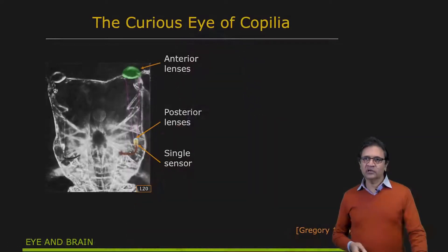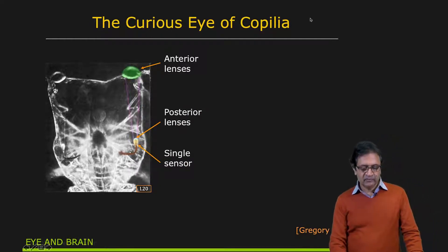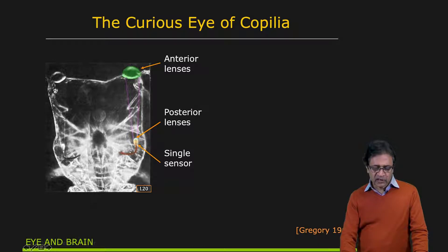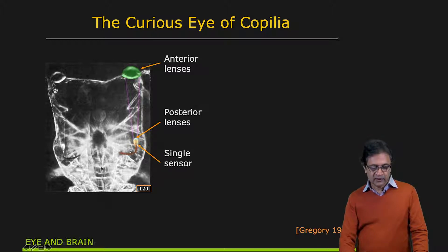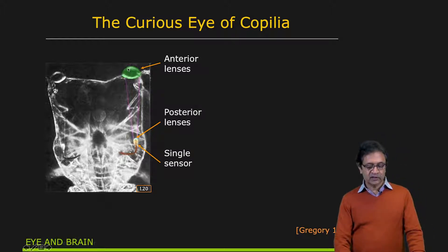Now let's take a look at some of the image sensors that nature has created. Here is one interesting one — it's the curious eye of the copilia. Copilia is a crustacean, like a plankton. For our purposes here, we're looking at the head of it. You see that it has two lenses: it has an anterior lens, an external one right here — a big lens — which is forming an image.